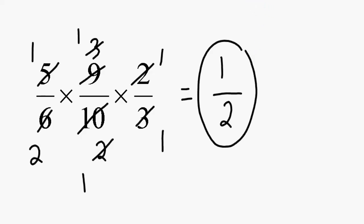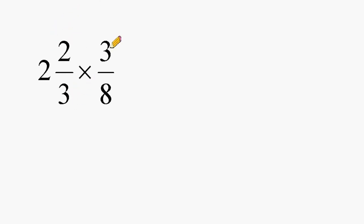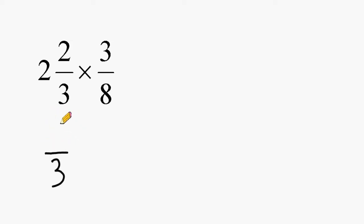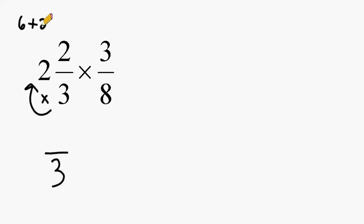Now let's do an example involving a mixed number: 2 and 2/3 multiplied by 3/8. Before multiplying a fraction with a mixed number, you must rename the mixed number as an improper fraction. First, write the denominator exactly the same — we keep thirds. To get the numerator, multiply the denominator by the whole number: 3 times 2 is 6. Then add that to the numerator of the mixed number: 6 plus 2 equals 8. So 8/3 is the same as 2 and 2/3.